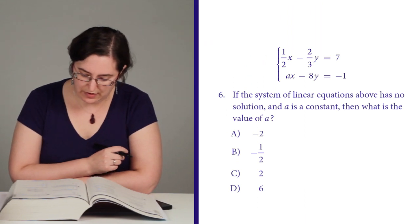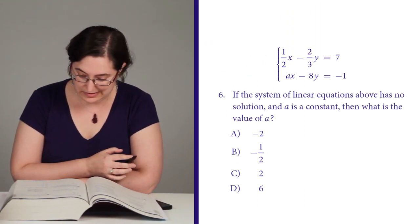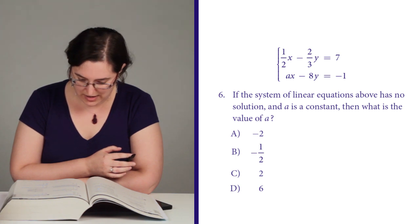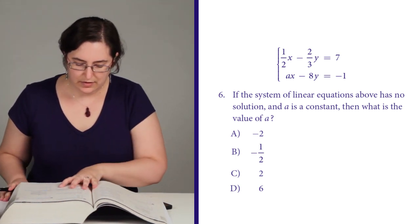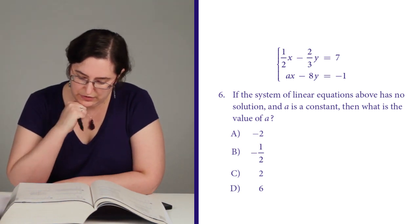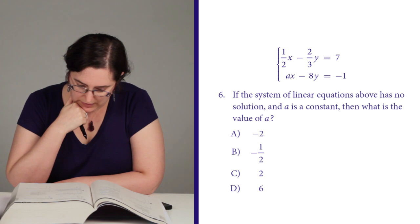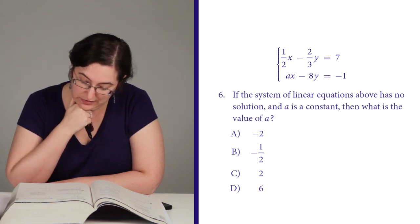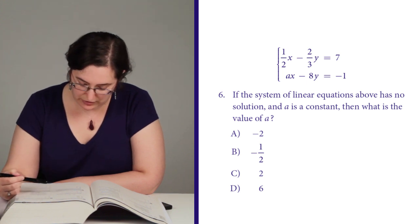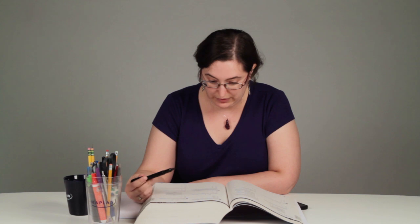Alright, let's try one more. Page 69, number 6. If the system of linear equations above has no solution and a is a constant, then what is the value of a? Alright. So I need to find a is the coefficient of x. And I think the most efficient way to find this is going to be putting both of these into slope-intercept form, because as it is, my y's don't match up. So I need to get my numbers to match up in order to figure out what a is.